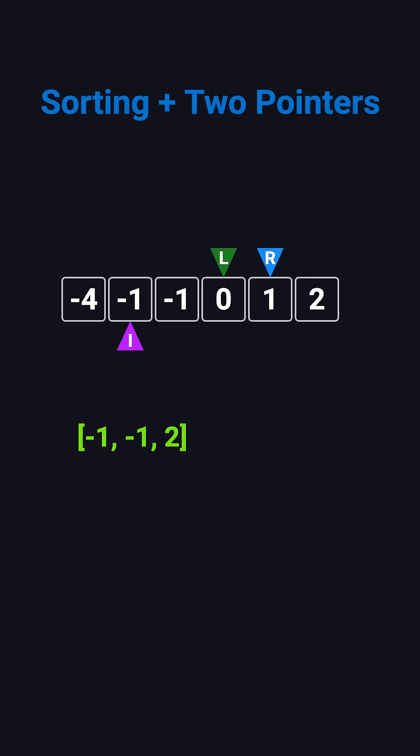Left moves to 0, right moves to 1, and the sum is 0 again. We record the second result: negative 1, 0, 1. After that, the pointers cross and this round ends.